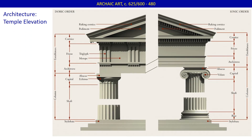The two major stylistic orders, the Doric and the Ionic, developed in the last century. Each order is immediately recognizable by the capitals on the columns. The Doric column has a simple, almost cushion-like capital called an echinus, while the Ionic column features a more elaborate capital with volutes. The Doric column has no base and sits directly on the stylobate. The Ionic column has an elaborately carved base, as well as a more ornate abacus.